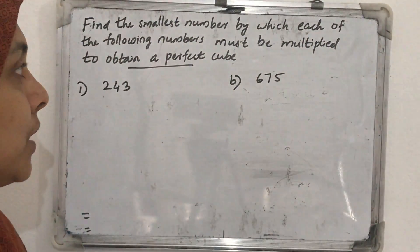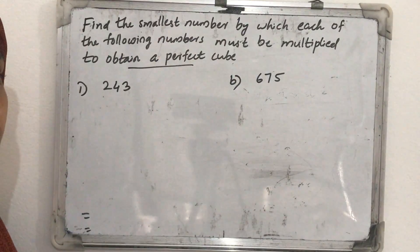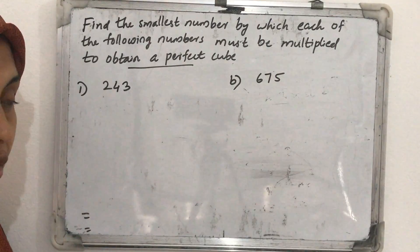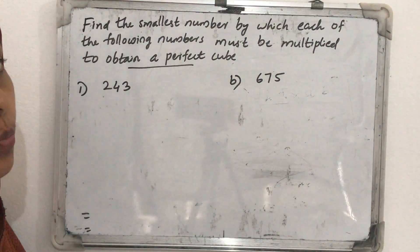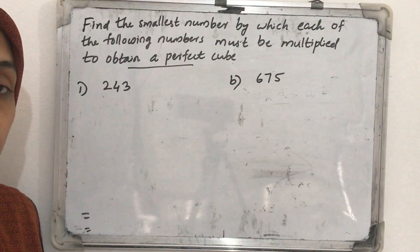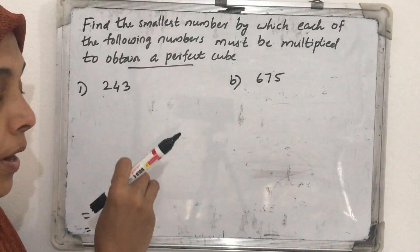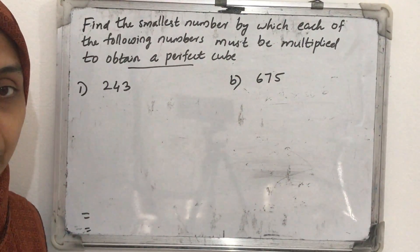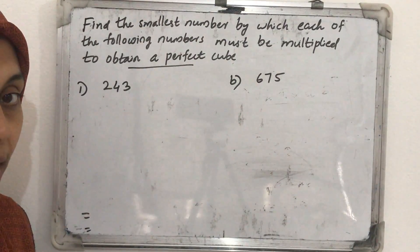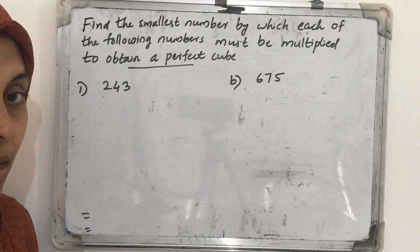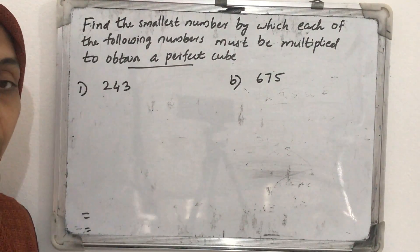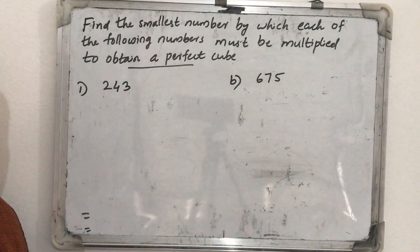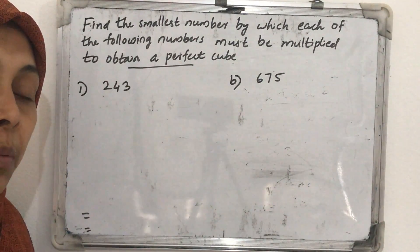Good morning. Today we discuss this question: find the smallest number by which each of the following numbers must be multiplied to obtain a perfect cube. The given numbers are not perfect cubes, but we want to find out by multiplying which number we can make them perfect cube numbers, just like similar questions with squares.